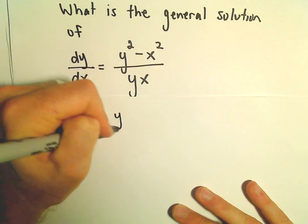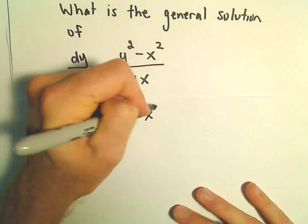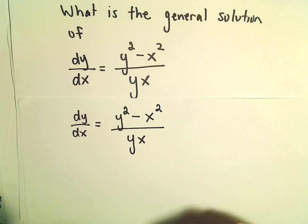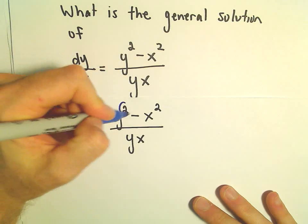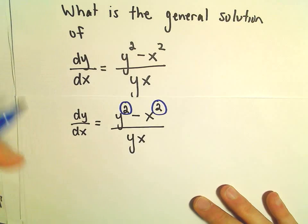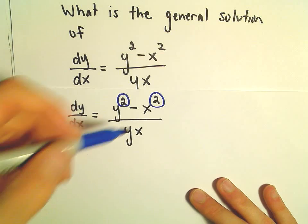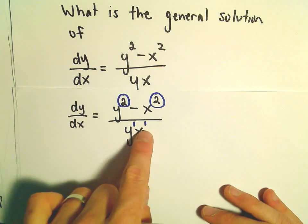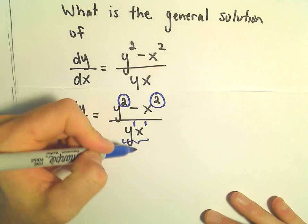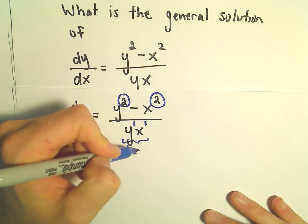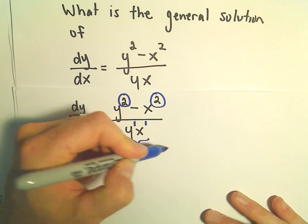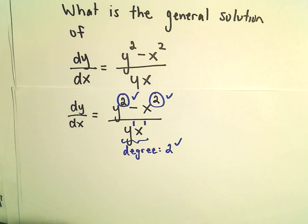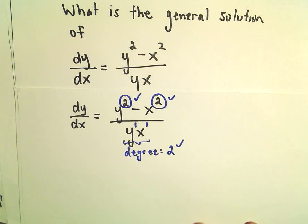For it to be homogeneous, every single term in the numerator and the denominator has to have the same degree. Notice in the numerator, our first term has degree 2, the second term has degree 2. In the denominator, it's y to the first times x to the first, so we add the exponents — this term also has a degree of 2. Since all the terms have the same degree, this is a homogeneous differential equation.